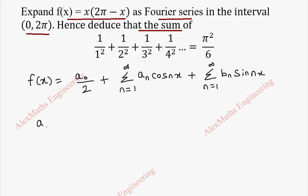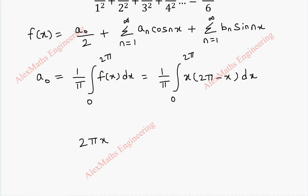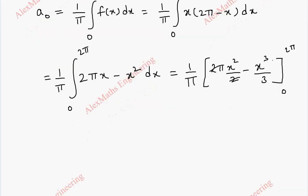For a₀, the formula is (1/π) ∫₀²π f(x) dx. Substituting f(x) = x(2π - x), we multiply inside to get (2πx - x²), so we have (1/π) ∫₀²π (2πx - x²) dx. Integrating: 2πx → x²/2, and x² → x³/3. We evaluate from 0 to 2π, substituting x = 2π for the upper limit.